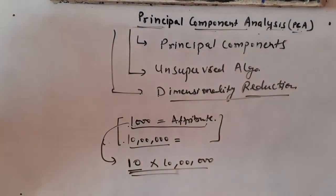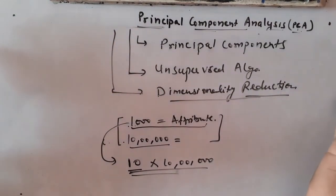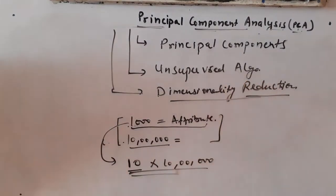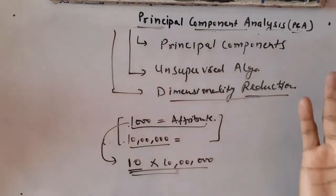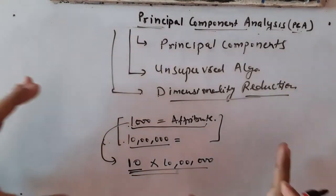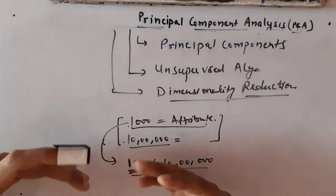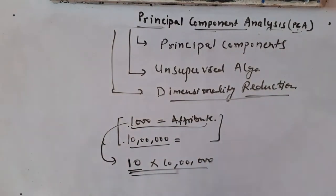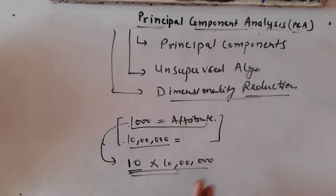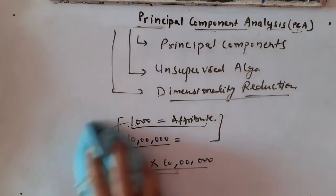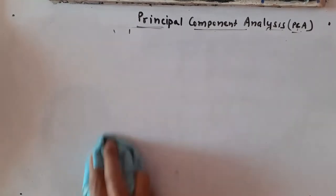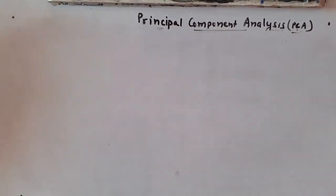Basically this algorithm is used in cases where we have thousands of features and many records. When we need to decrease the number of features based on their relevance or importance with respect to the target variable, we can use this algorithm. We pick the most relevant, most important attributes with respect to our target variable. That's a kind of introduction about Principal Component Analysis.